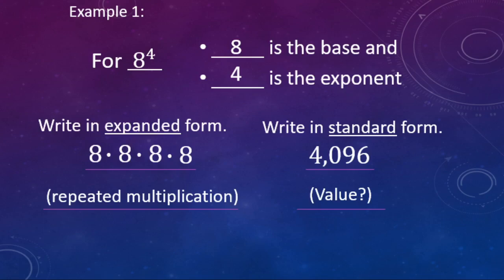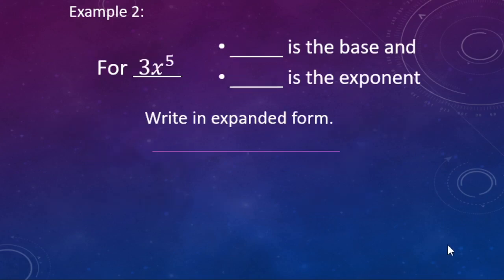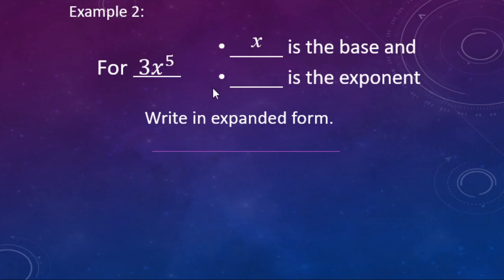Another example: three x to the fifth power. First question — what is the base? The base of the exponent is what is directly to the left of it. In this case it's just the x; the three is not part of the base of the exponent, it's not part of the power. The exponent is the superscript number written up a little bit taller, so five is the exponent.